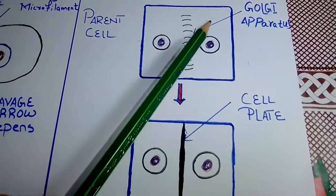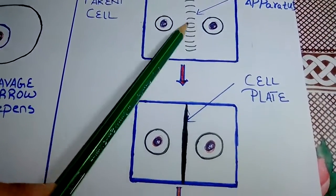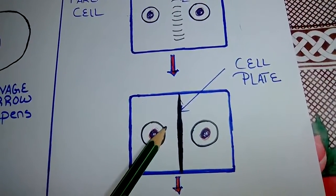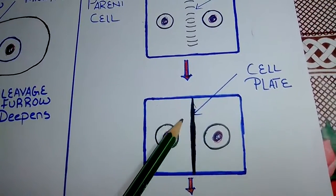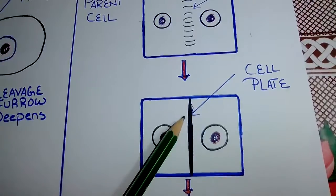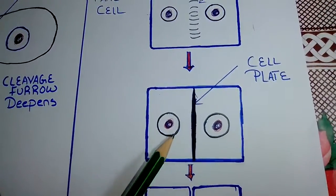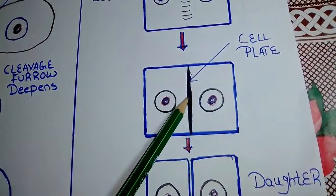Vesicles from the Golgi apparatus move to the middle of the cell and fuse to form the cell plate. The plate grows outward, and more vesicles fuse with it. Finally, the membrane of the cell plate fuses with the plasma membrane.